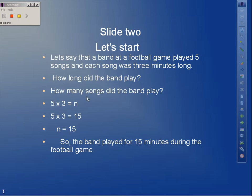How long did the band play and how many songs did the band play? Let's check it out. The band played five songs, each one was three minutes long, so we're going to figure out how long did the band play. As our equation shows, 5 times 3 equals n, so our variable of n is going to be 15. The band played for 15 minutes during the football game.